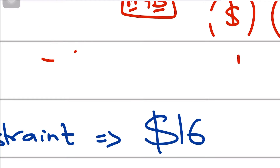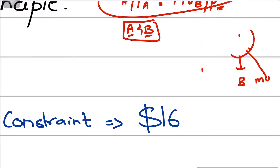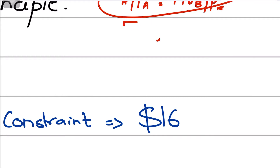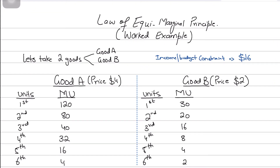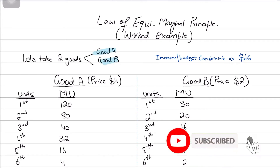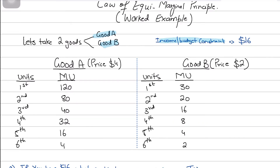I'm going to solve this through a worked example so you can clearly understand instead of just learning what the formula says. Let's take two goods — good A and good B — and say there's a budget constraint of 16 dollars. That is our limited income, and we have to spend all 16 dollars on buying a certain quantity of good A and a certain quantity of good B.